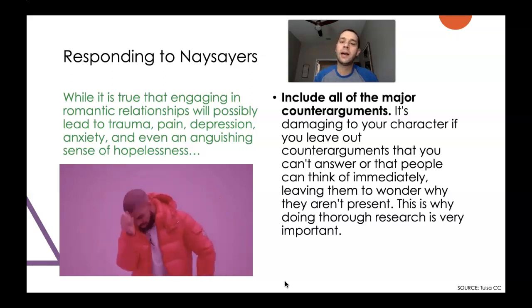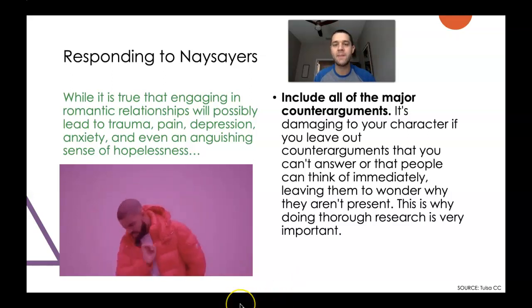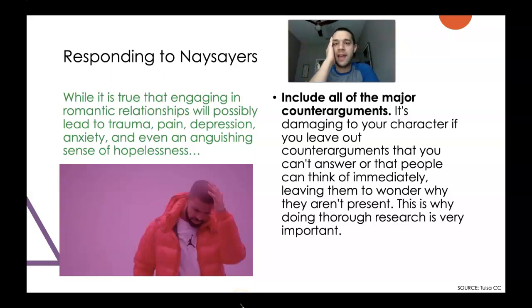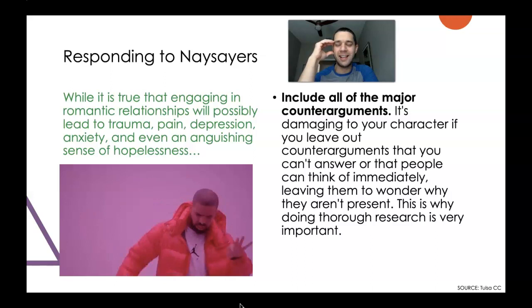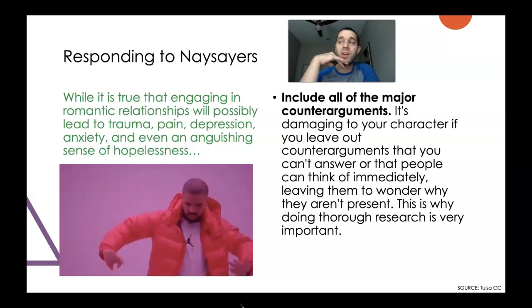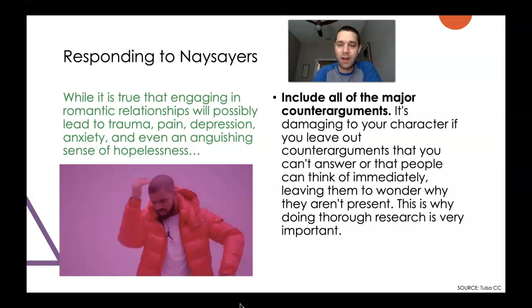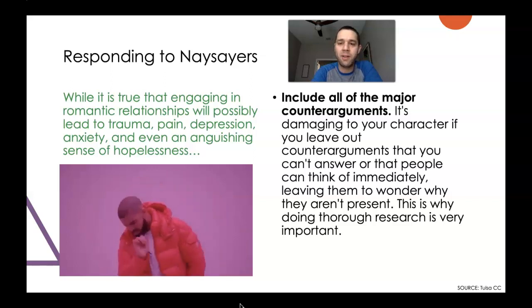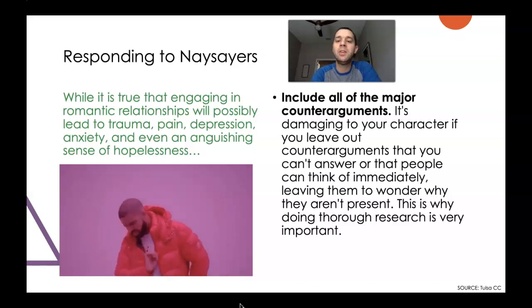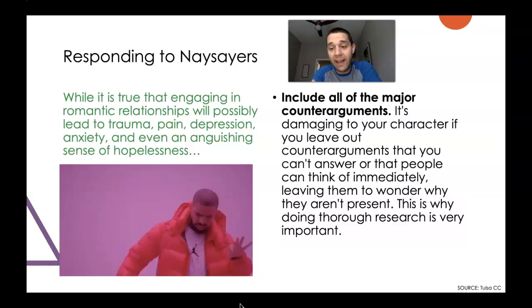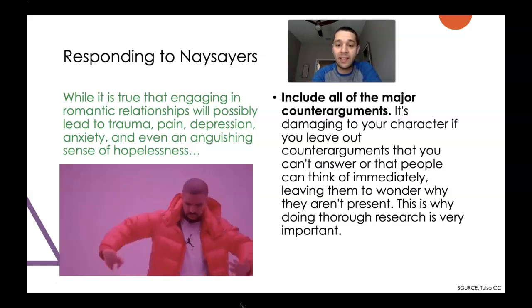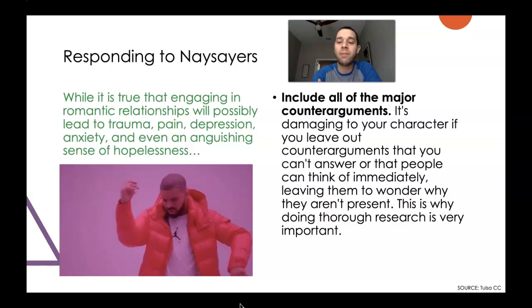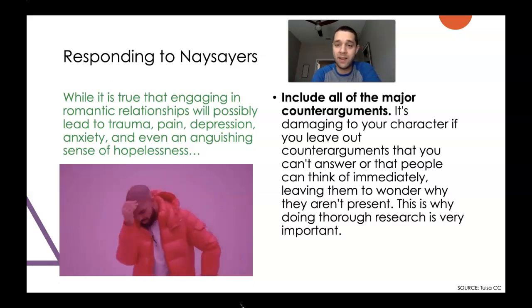Include all of the major counterarguments. Lots of times when we're thinking about how people would respond to us, we overlook weaknesses in our own argument. When you ignore those types of things, you seem like a less credible person making arguments. You might not even be able to shoot them all down, but you can probably shoot most of them down and make a reasonable argument as to why you hold the most reasonable position. It's damaging to your character if you leave out counterarguments that people can think of immediately, leading them to wonder why they aren't present.